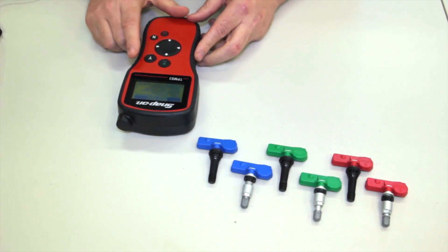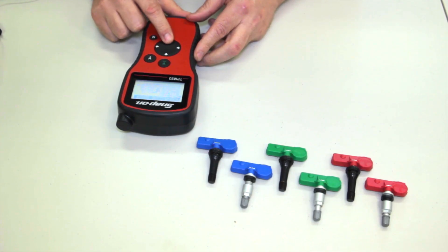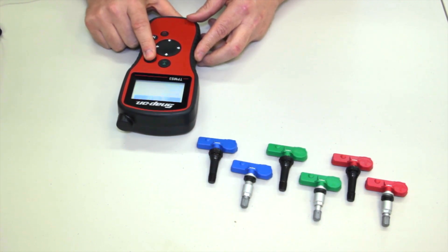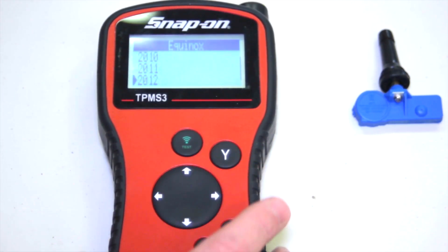Power the tool up, select program sensor, scroll to the quick sensor. Today we're going to select a Chevy Equinox model year 2012 and we're going to create a new sensor.